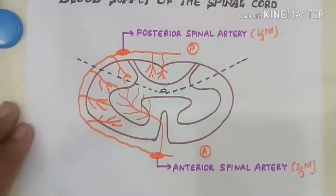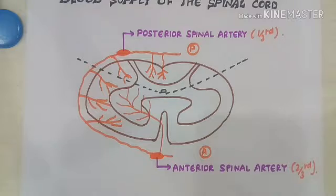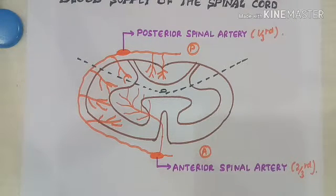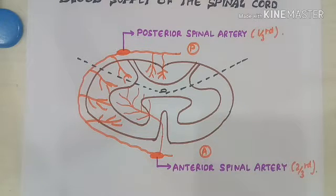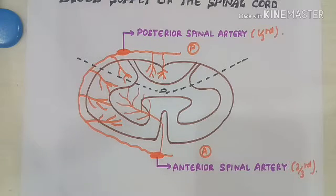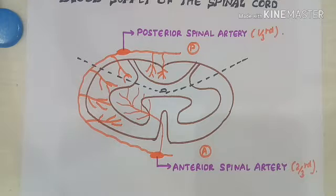The posterior spinal artery does not cover much area of the spinal cord — it only supplies to the one-third part of the spinal cord. The main artery supplying the spinal cord is the anterior spinal artery, which covers the two-thirds part. So the anterior spinal artery supplies two-thirds, whereas the posterior spinal artery supplies only one-third of the spinal cord.